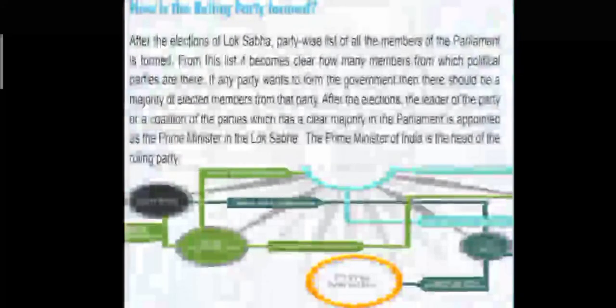How is the ruling party formed? After the elections of Lok Sabha, a party-wise list of all the members of parliament is formed. From this list, it becomes clear how many members from which political parties are there. If any party wants to form the government, there should be a majority of elected members from that party. After the elections, the leader of the party or a coalition of parties which has a clear majority in the parliament is appointed as the Prime Minister.